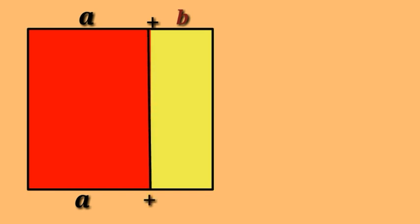First of all, we take a square. Here, we divided two parts. One is a and another one is b.